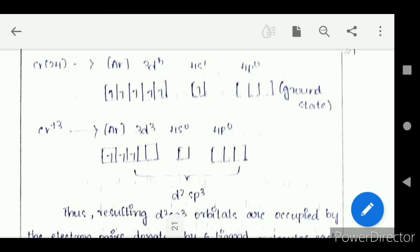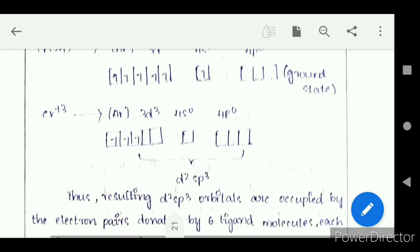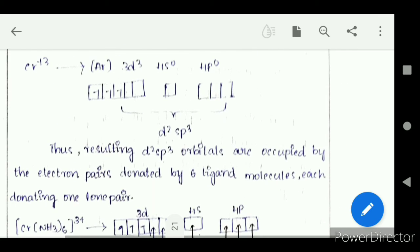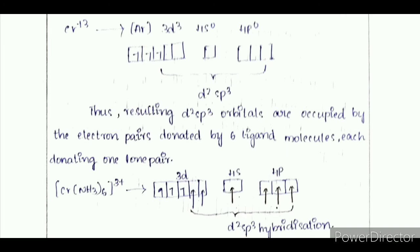It is having d2sp3 hybridization. Thus the resulting d2sp3 orbitals are occupied by the electron pairs donated by 6 NH3 ligand molecules, each donating one lone pair, giving d2sp3 hybridization.